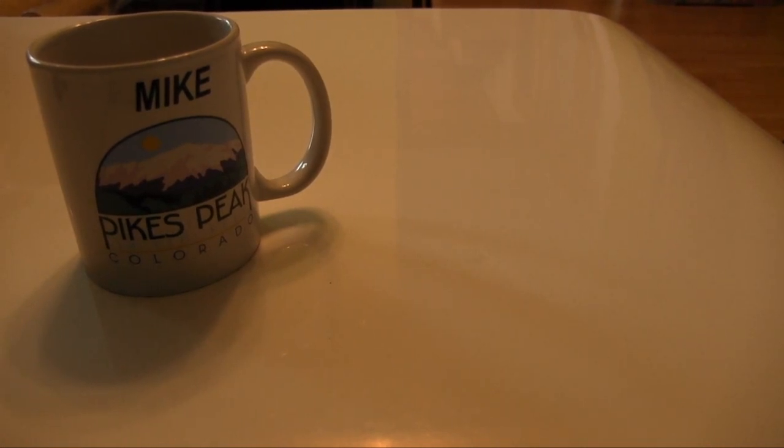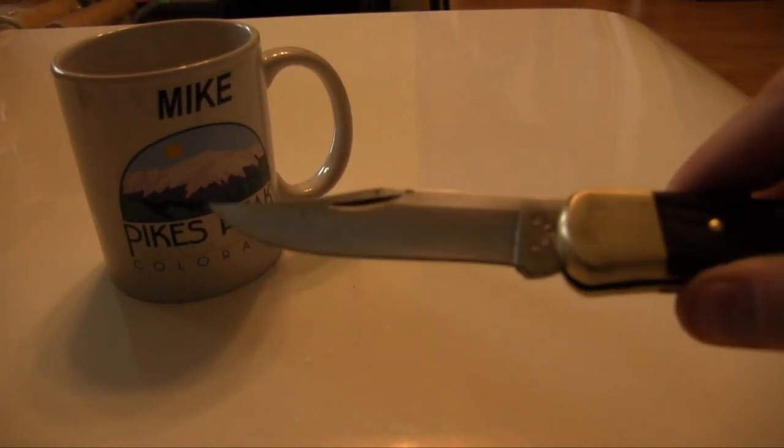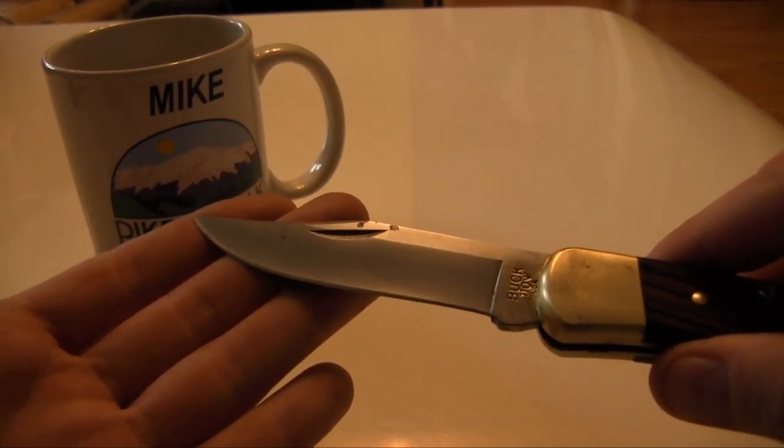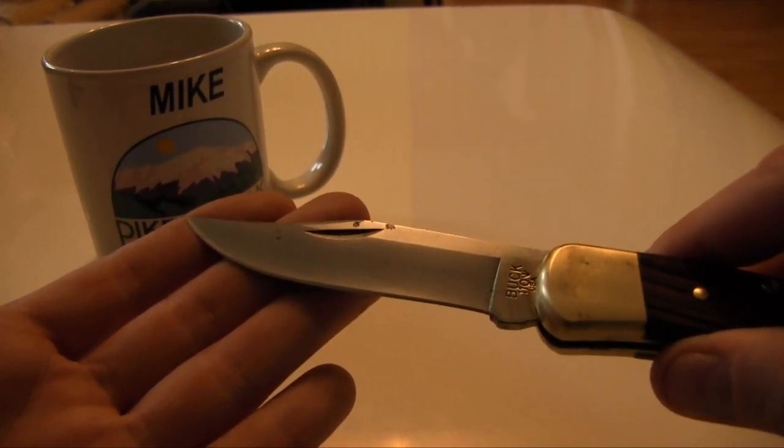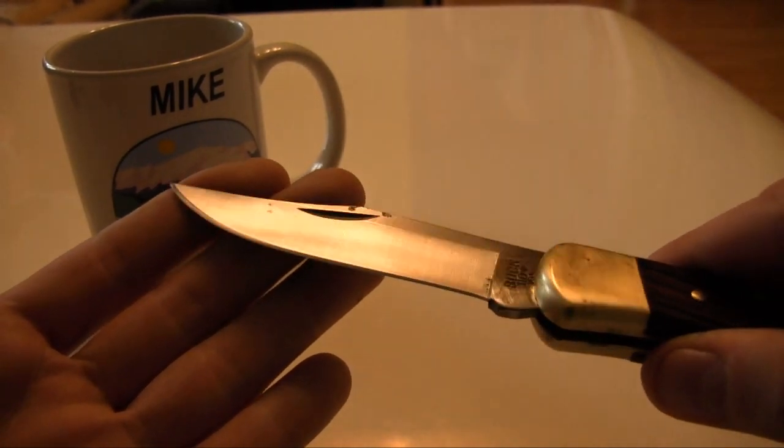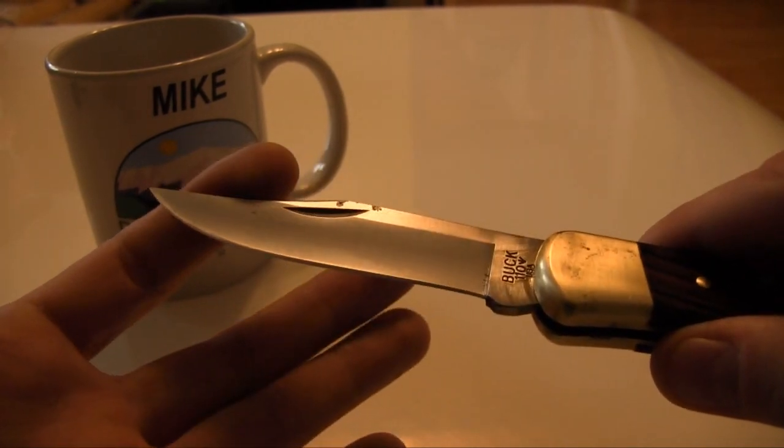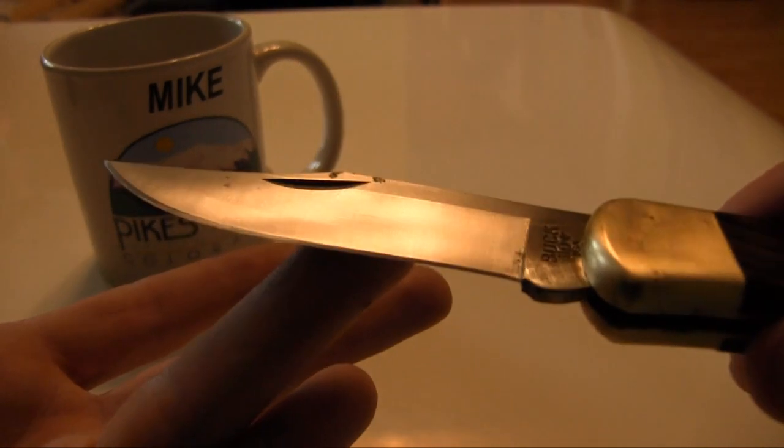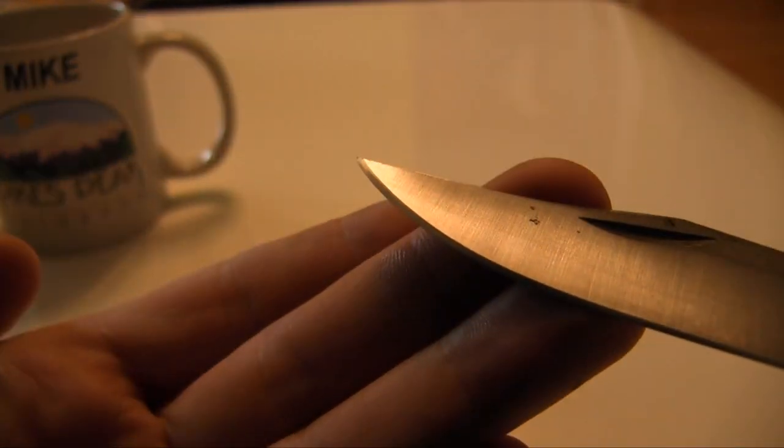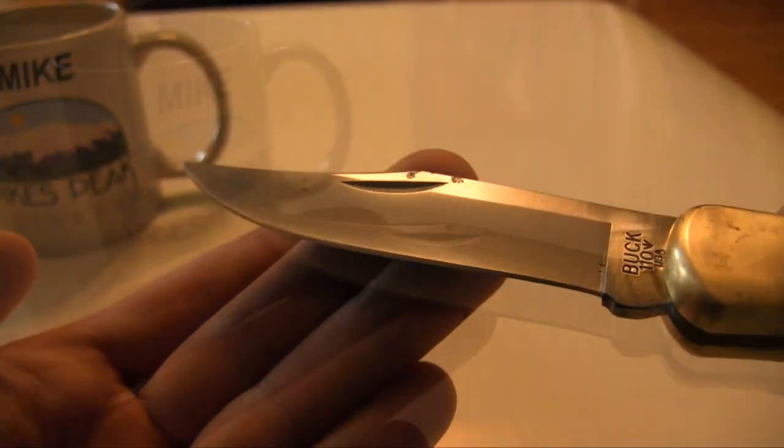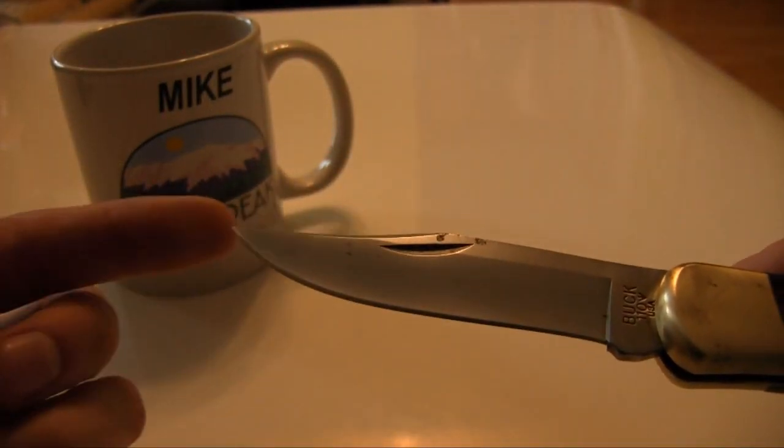Buck is using his 420HC stainless steel that they have perfected in heat treating and manufacturing over years, with a Rockwell hardness of 58RC. The blade shape is a clip point design, as you can see here. Versatile and useful in any situation with a very nice tip.